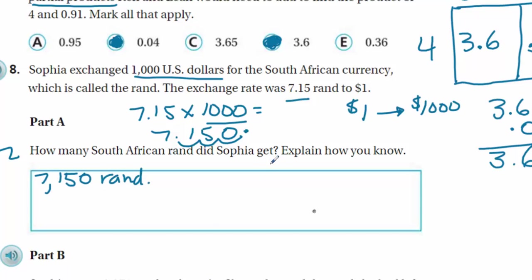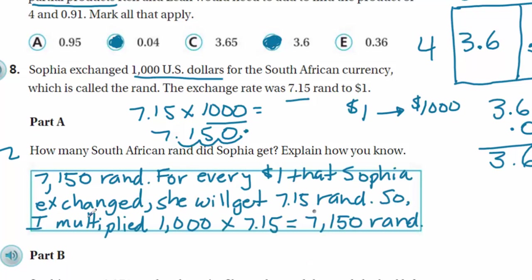Now, the question becomes, how did you know? Well, I was kind of talking through the problem. Basically, here, for every dollar that Sophia exchanged, because she has to exchange 1,000. So, for every dollar that Sophia exchanged here, she's going to get this amount. I just simply multiplied 1,000 with the 7.15 to get my 7,150 Rand. So, let me go ahead and write that down.